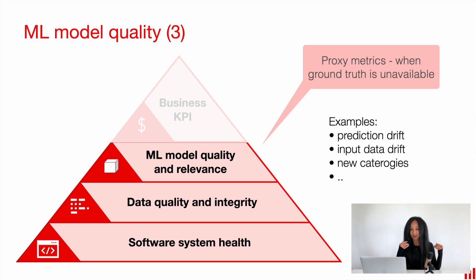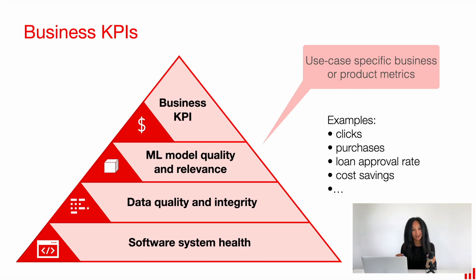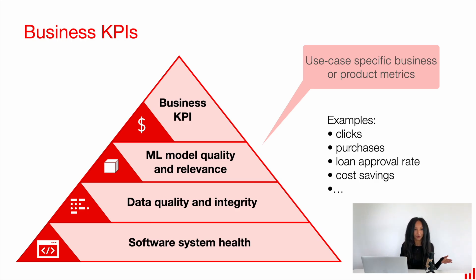Do not ignore data drift, prediction drift, or things like new categories in categorical features. Even if the quality of the machine learning model is great, you might still face issues. What if product metrics are down? This is why it's essential to talk to your product managers or business team to figure out the KPIs of your system and implement monitoring for business KPIs. It might be, for example, number of clicks, number of purchases, loan approval rates, or cost savings — whatever it takes to figure out how the business is going.